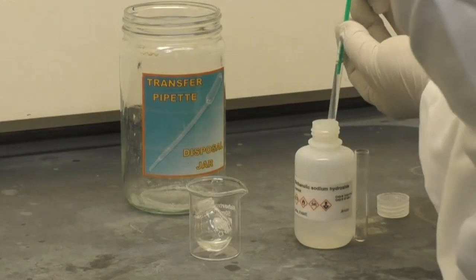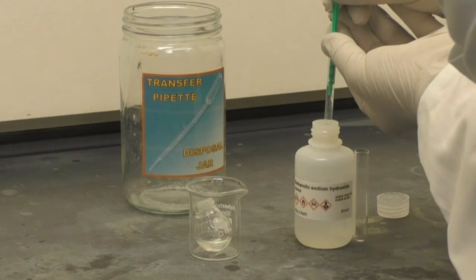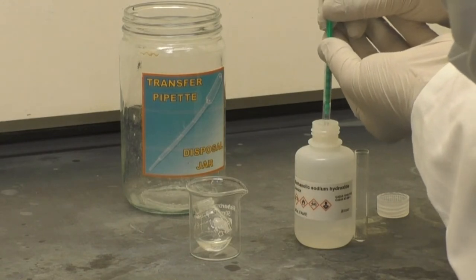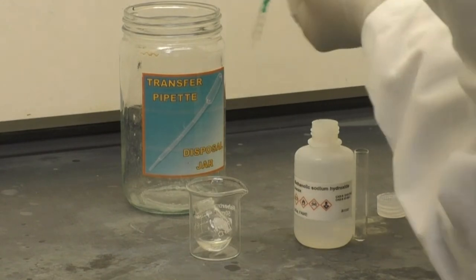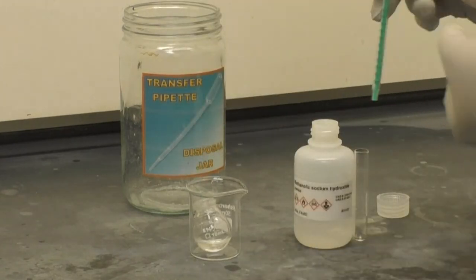Using a 1 ml syringe, add 0.5 ml of 0.5 molar sodium hydroxide methanol solution.